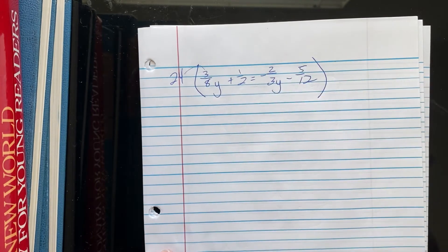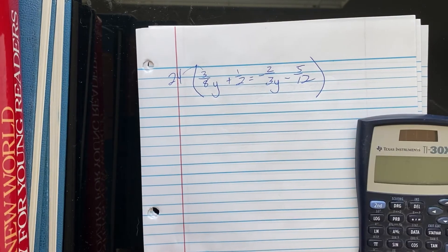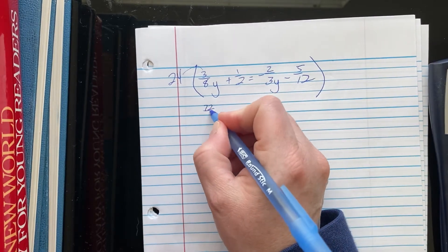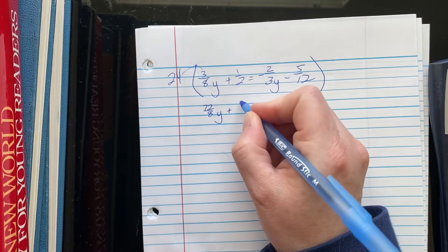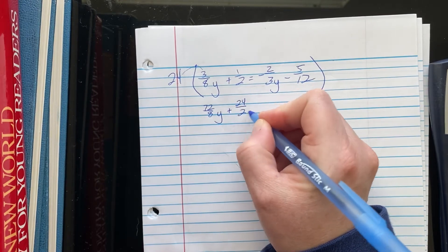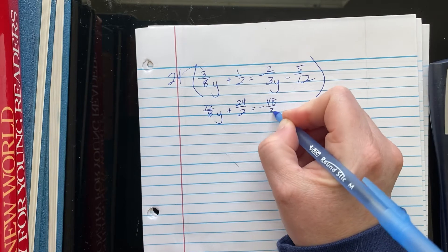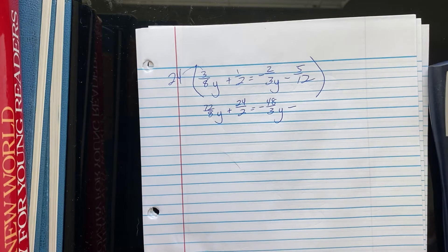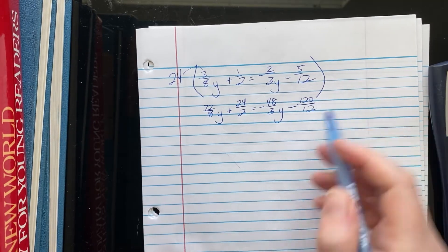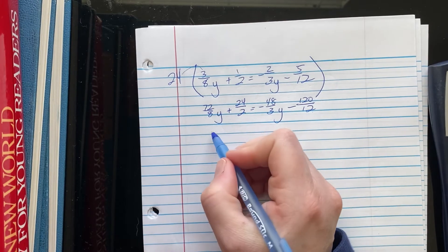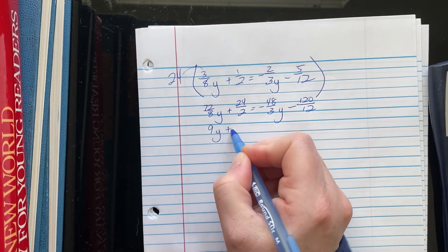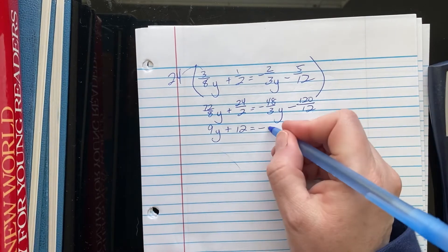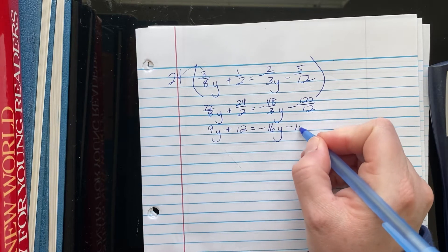Because I know that when I multiply all of these by a whole number of 24, I'm going to end up with whole numbers. And that's kind of understanding how fractions work. So, 24 times 3 eighths. 24 times 3 is 72 eighths Y plus 24 halves equals negative 48 thirds Y minus 120 twelfths. Now, if you know numbers like I know numbers, this is 9Y plus 12 equals negative 16Y minus 10.